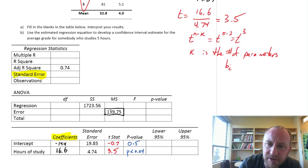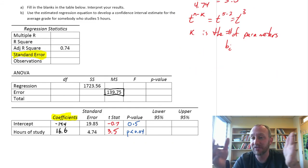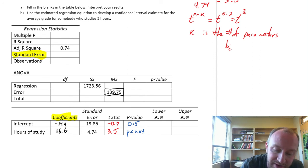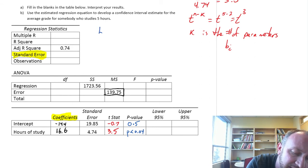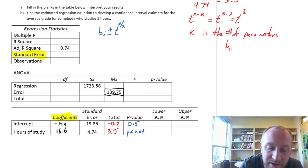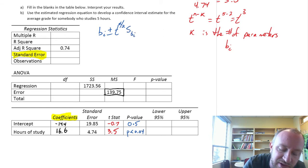We've got our t-statistics and p-values. Now we can also get a confidence interval estimate. The confidence interval equation will look very familiar: it's the point estimate plus or minus the critical value times the standard error of that coefficient.